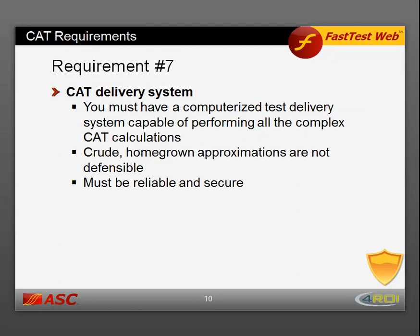Requirement number seven: you must have a CAT delivery system — that is, a computerized test delivery platform capable of performing all the complex CAT calculations. Crude homegrown approximations are not defensible; developing your own simple algorithm to move items up or down in subjective difficulty is not an appropriate CAT delivery platform. The system must also be reliable, secure, and able to handle large volumes of examinees performing all these complex calculations.